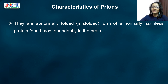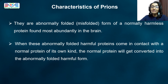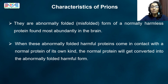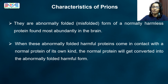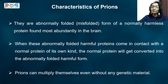But interestingly, when these abnormally folded harmful proteins come in contact with a normal protein of its own kind, the normal protein will get converted into the abnormally folded harmful form. This means that prions can multiply themselves even without any genetic material.